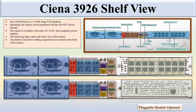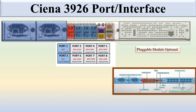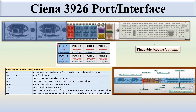In the next slides, we will discuss in detail about the different LEDs of this Sienna 3926 chassis. Looking at the Sienna 3926 port interfaces self-view, you can see the names of the different slots and interfaces. Slot numbers 1 and 2 are 1GB or 100MB optical or 1GB/100MB electrical ports.